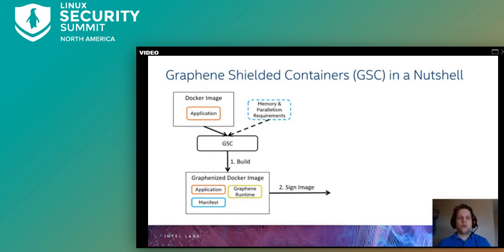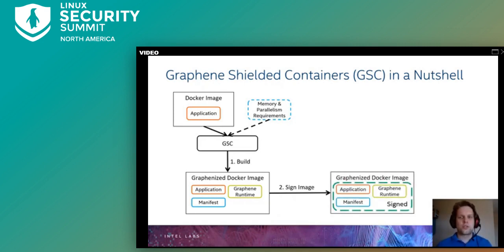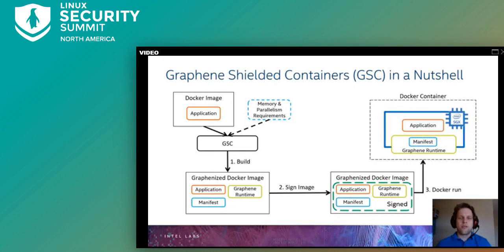All SGX applications must be signed by the developer's key. GSC signs the application, runtime, and manifest in a second step to ensure the user's signing key is never part of the persistent image. The signed image can then be started by a regular Docker run command, which starts the Graphene runtime, loads the manifest, builds the enclave according to manifest specifications, and starts running the application.